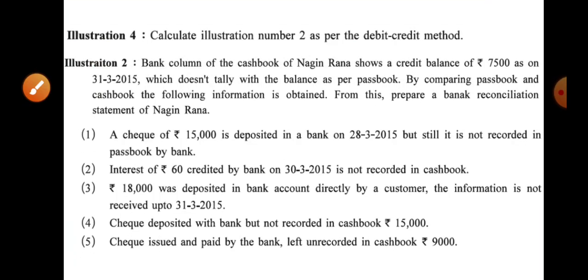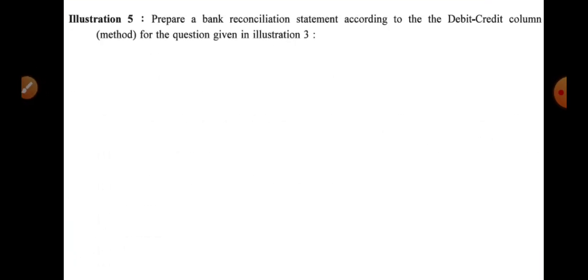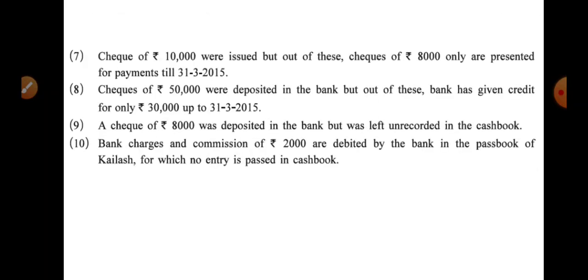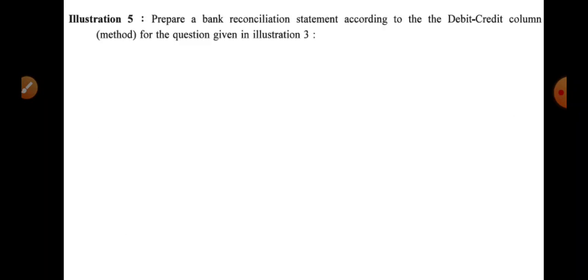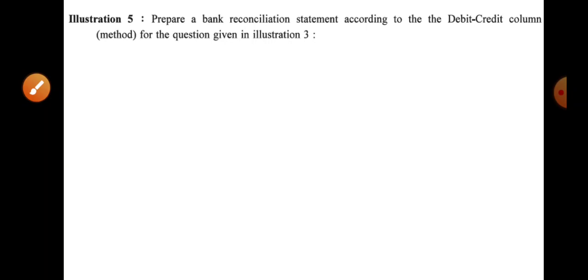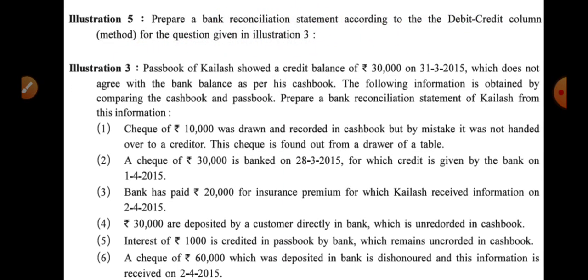Illustration 4 and illustration 5 ho chuke the. So let us have illustration number 5. Illustration 5 kehta hai: prepare a bank reconciliation statement according to the debit-credit column method from the given illustration 3. So illustration 3 ki information leni hai. Yeh rahi hamaari illustration 3 ki information.